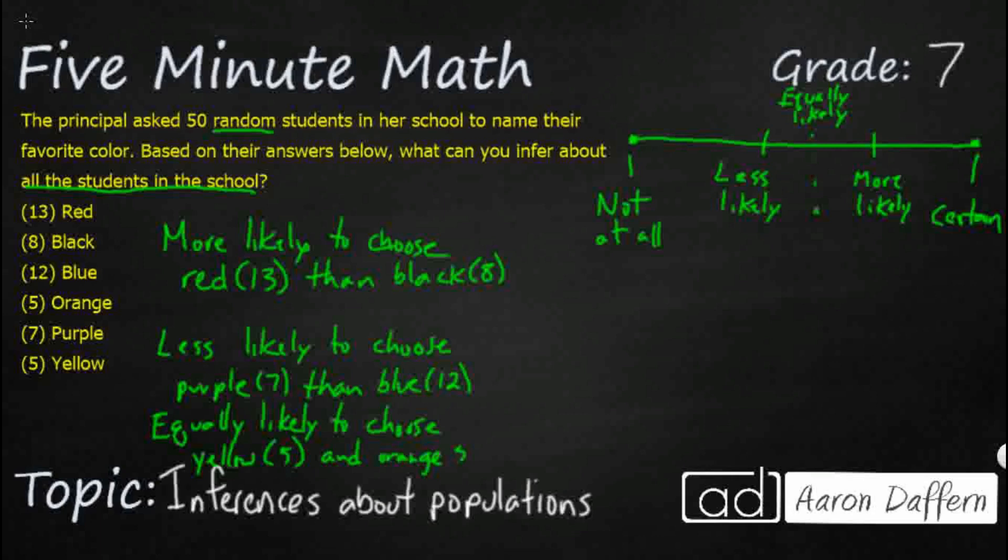Now, a lot of times when we're looking at this at the seventh grade level, they are going to combine a little bit. So let's say we are more likely to choose two of the smaller ones: black and orange. Black is eight or orange. We're going to use or rather than and because they're not going to pick both, they're going to pick one or the other. But when we see black or orange, we're going to combine those two. That basically means we've got a number of 13 here because you get eight and five. They're more likely to choose black or orange than blue, which is 12. If we wanted to make this equally likely, we'd put red in there. If we want to make it more likely, we put black or orange. And those are just some inferences we can make about populations.